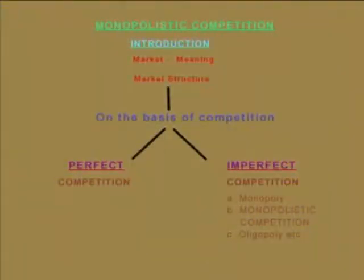The market, on the basis of nature of competition, is classified into two: namely perfect competition and imperfect competition. In imperfect competition there are various forms — namely monopoly, monopolistic competition, oligopoly, duopoly, etc. Of these various forms, we are now going to see monopolistic competition in detail.